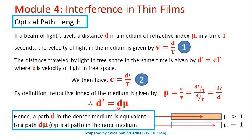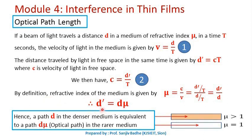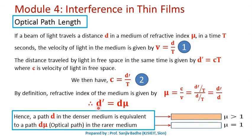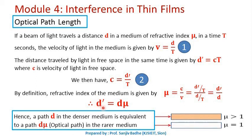What is the meaning of this? If d is the distance traveled by the light ray in a denser medium, it is the same as the light ray traveling distance d dash in the rarer medium, that is in free space. So in short, d dash is the equivalent path that would have been traveled by the light in free space. Therefore, d is called the path traveled by the light ray, and d dash is called the optical path of the light ray. Optical path means the equivalent path that would have been traveled by the light ray in free space.